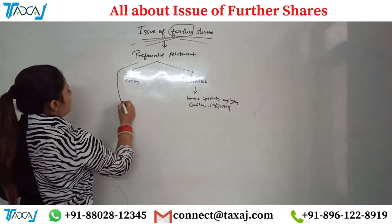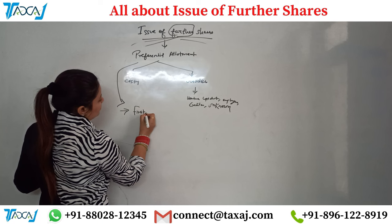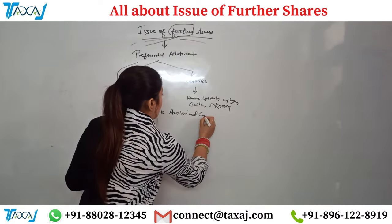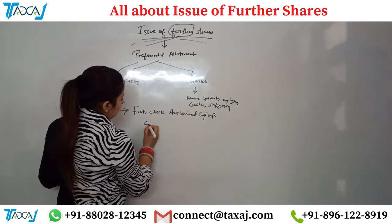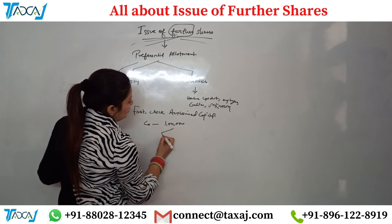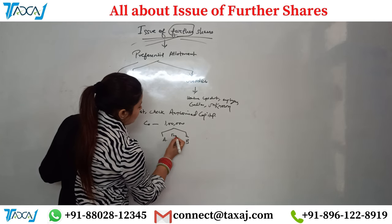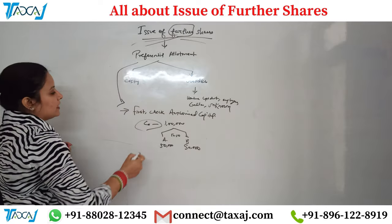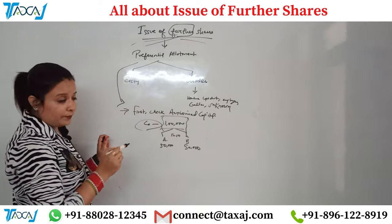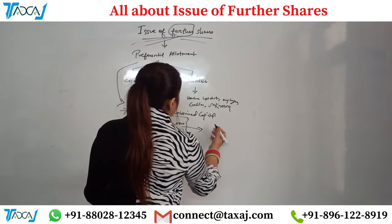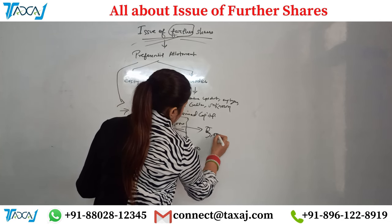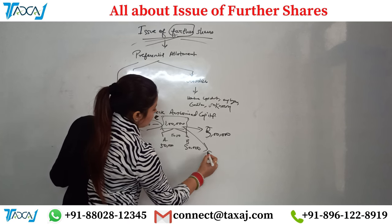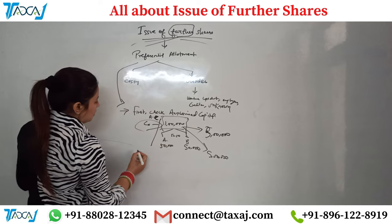The very first step is to check the company's authorized capital — we need to verify that the authorized capital covers the amount of shares we intend to issue. For example, suppose a company has a capital of 1 lakh with shareholders A and B holding 50,000 each. The company wants to expand and needs 5 lakh in funds by issuing shares, but the authorized capital is only 1 lakh, so they cannot issue 5 lakh worth of shares directly.